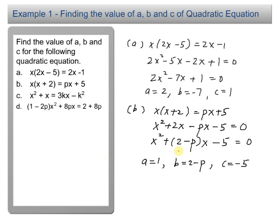So it's very simple. Remember, after you have the general form, your coefficient of x squared is a, your coefficient of x is b, and the constant is c.